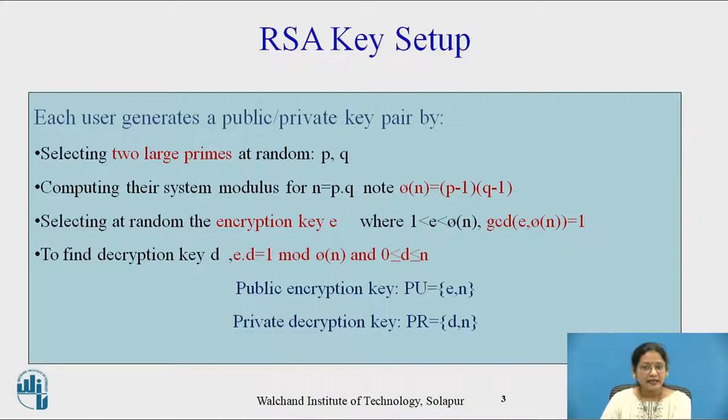Before that, it is important to generate a pair of keys. Each user generates a public-private key pair by selecting two large primes at random, let's say p and q, then computing their system modulus n equals p multiplied by q, and note phi of n equals (p-1) multiplied by (q-1).